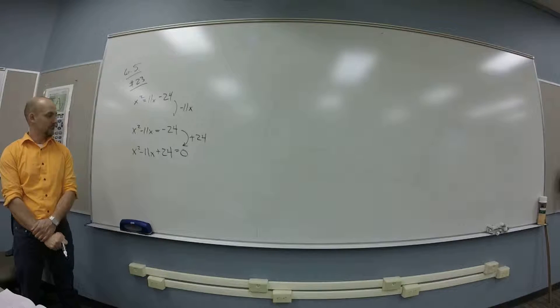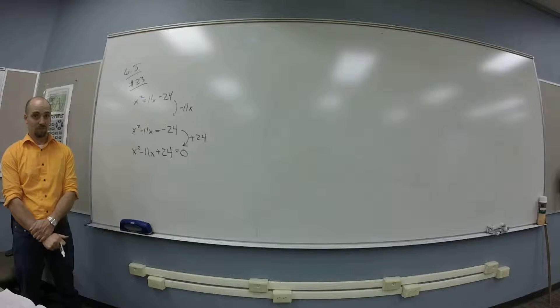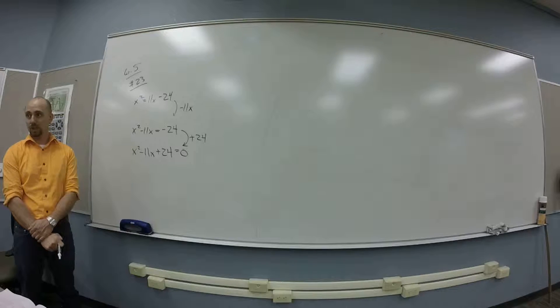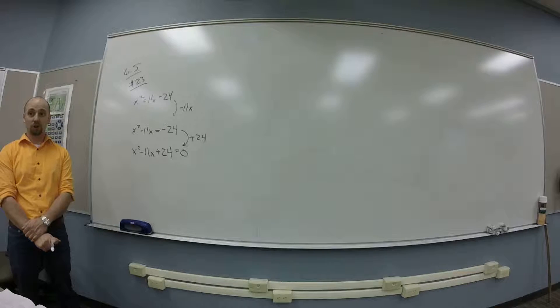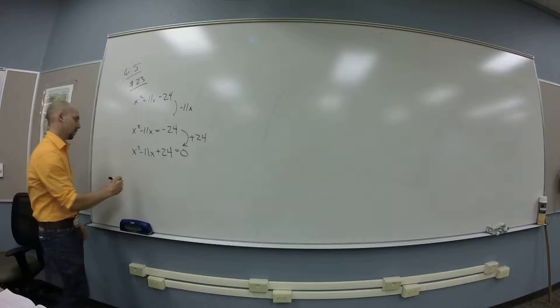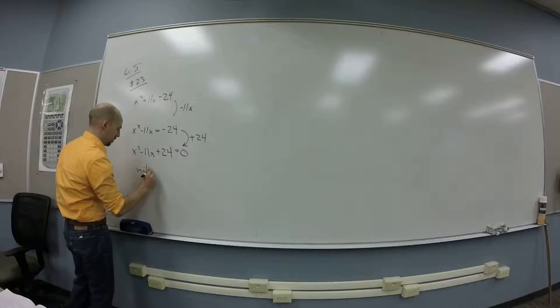Okay, what's the A on this one? One. C is 24. So I should multiply them. So I'm looking for things that multiply to 24 and add to be negative 11.